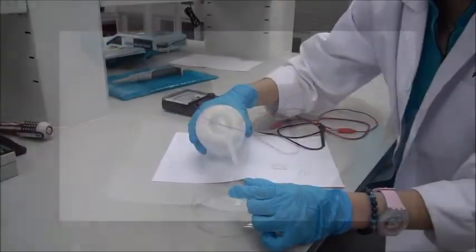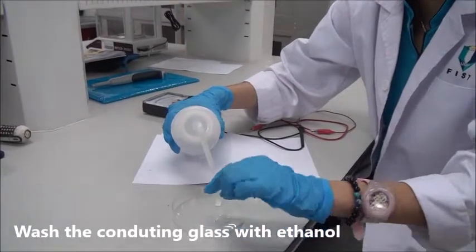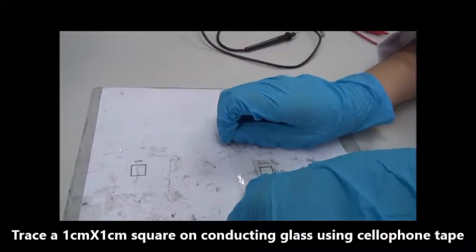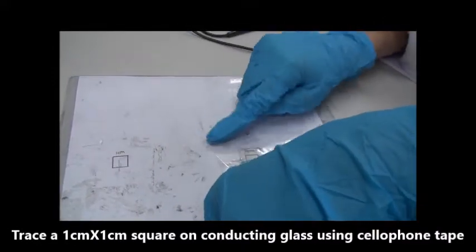Then we'll wash the conducting glass with ethanol. Then we'll use cellophane tape to trace a 1cm by 1cm square on the conducting glass.